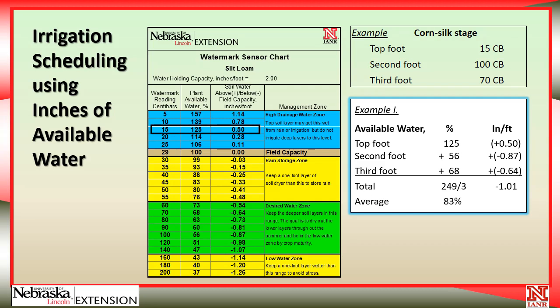The 15 reading shows 0.5 on the chart. Moving that into our calculations box, at 125% of plant available water on a silt loam soil, that's one-half inch above field capacity. The 100 reading gives negative 0.87 below field capacity. The third reading of 70 gives a negative 0.64. When we add these numbers together, we end up with negative 1.01 inches of water.